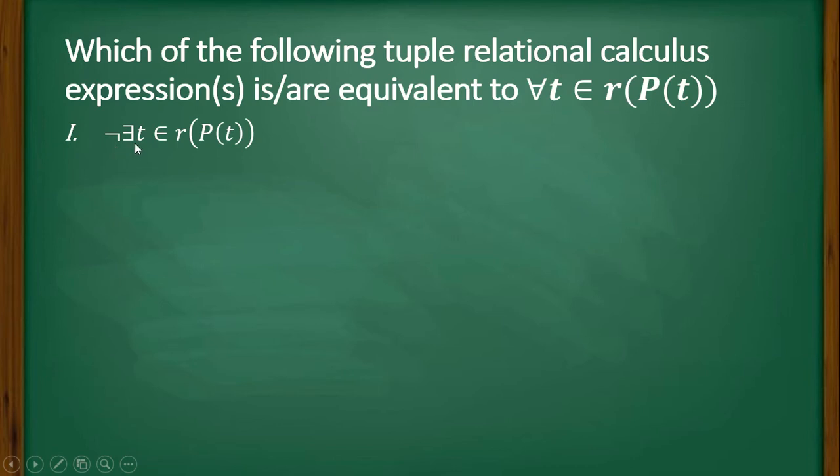Option I: There does not exist any t belongs to r, predicate P(t). Next is option II: There is t not belongs